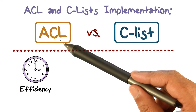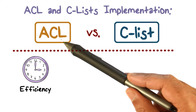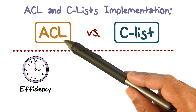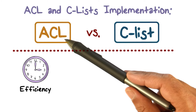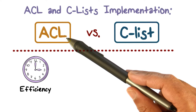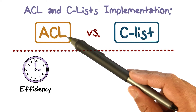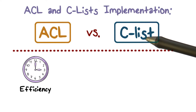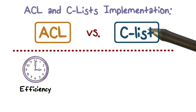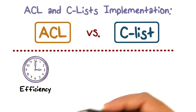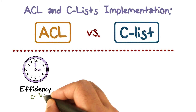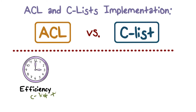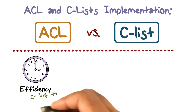First, we always worry about efficiency. With ACLs, you have to traverse the list, going down looking for an access control entry for the user who made the request. Traversing a list has some processing overhead. With a capability list, it's a handle — once it's been propagated to you, you present it to the system, and the system knows that by mere possession of this capability, you can access the resource. So when it comes to efficiency, CLists are faster. We don't need to traverse anything, but ACLs require going down a list. Efficiency-wise, CLists are better.